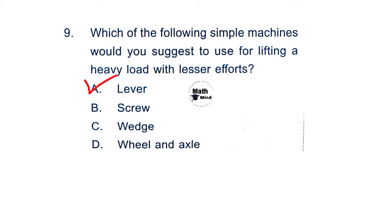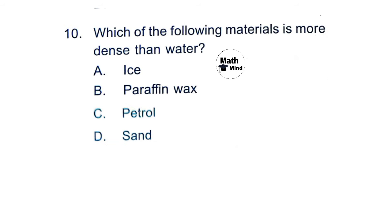There are three types of lever: class one, class two, and class three. Question 10: Which of the following materials is more dense than water? Option D is correct: sand.